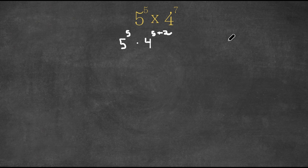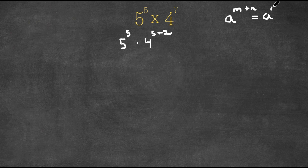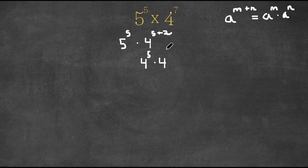Now an important property of exponents is that if we have a to the power of m plus n, this is the same thing as a to the power of m times a to the power of n. So if we have 4 to the power of 5 plus 2, this is the same thing as 4 to the power of 5 times 4 to the power of 2, because 5 in this case is m and 2 is n. And we're still multiplying this with 5 to the power of 5.